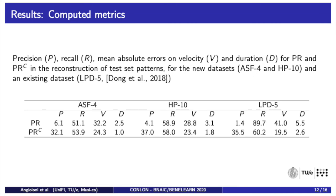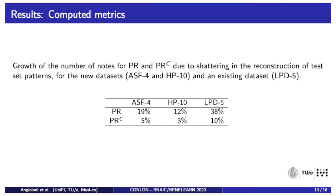We compared Wasserstein autoencoders fed by PR descriptions with Wasserstein autoencoders fed by PRC descriptions in their reconstruction of patterns from the test set. These results indicate that PR yields good recall but very low precision compared to PRC, and has a higher error on both velocity and duration than PRC on all three datasets. This could be partially explained by the presence of a high number of shattered notes. To verify this hypothesis, we computed the note number growth due to shattering for all the notes in the test set. As the table shows, the Wasserstein autoencoder fed with PR descriptions increases the number of notes by a substantially larger factor than the Wasserstein autoencoder fed with PRC descriptions for all three datasets.